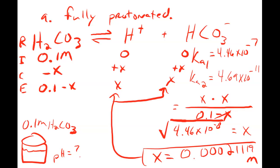For a monoprotic acid case we'd stop here, take the negative log of H⁺ concentration, and get the pH. But for polyprotic acids, you might notice that the bicarbonate ion produced still has a proton — can it donate that second H⁺? In fact, we know it can because Ka2 = 4.69 × 10⁻¹¹. So that product has two protons to donate.